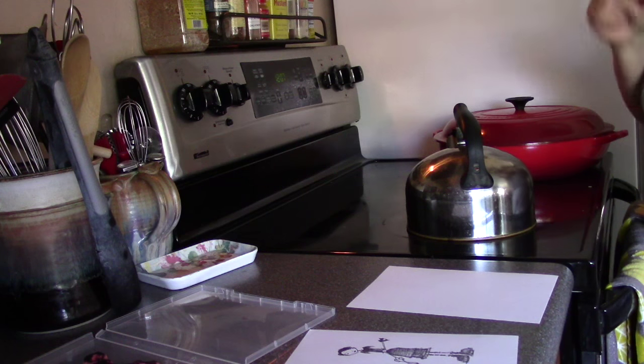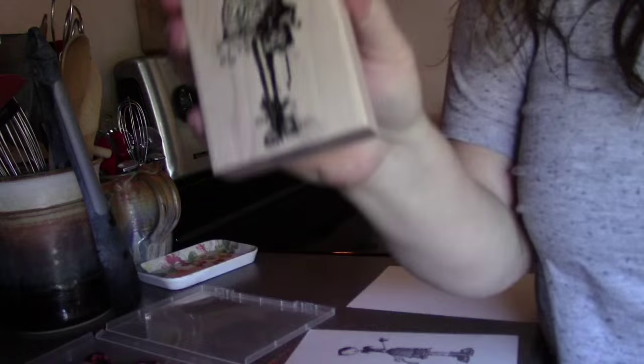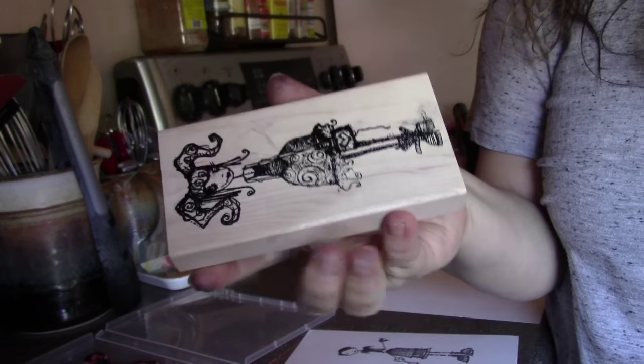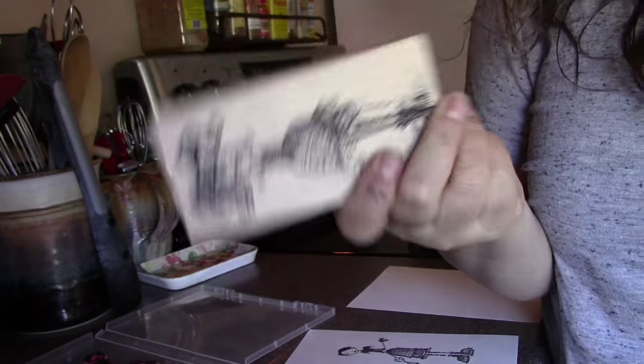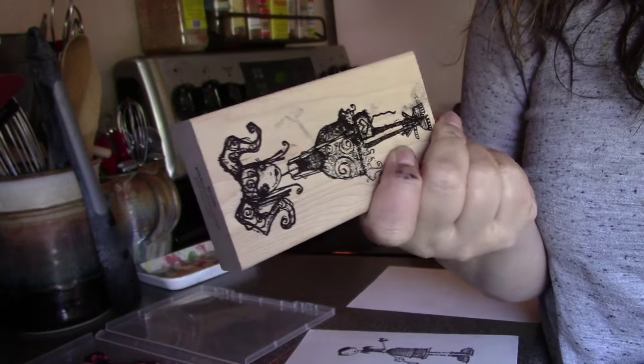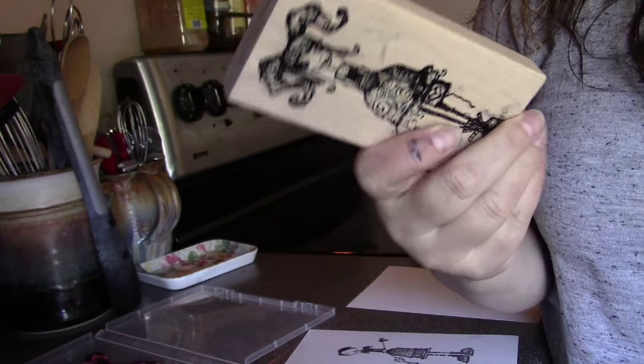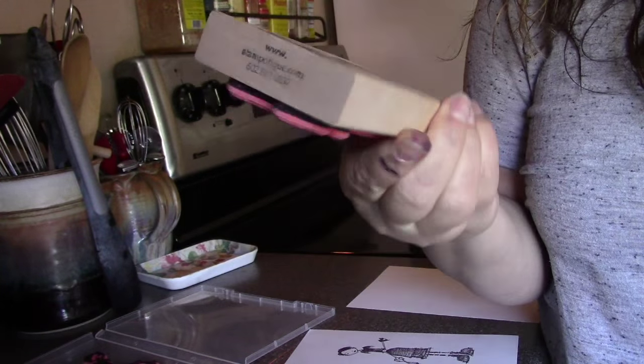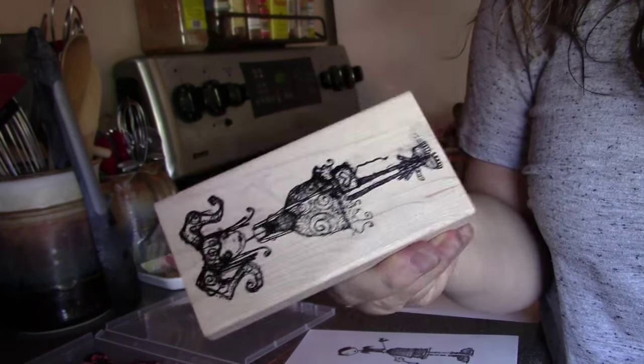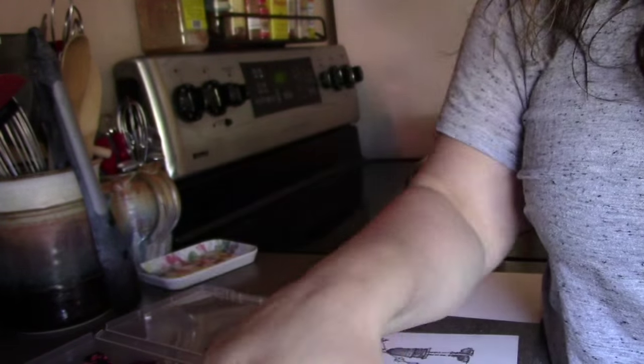So we're unmounting some wood-mounted stamps. These are Daniel Torrenti Stamp Boutique stamps. They don't come cling-mounted. They only come on wood blocks. And I've been thinking for a while about unmounting them, so I thought I'd shoot a quick video on how exactly to do that.